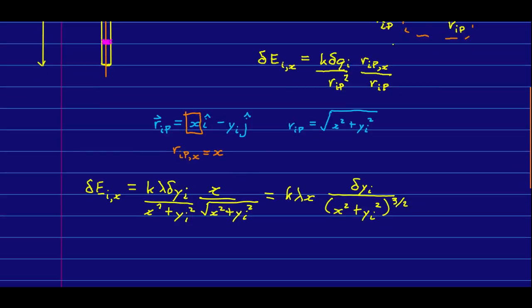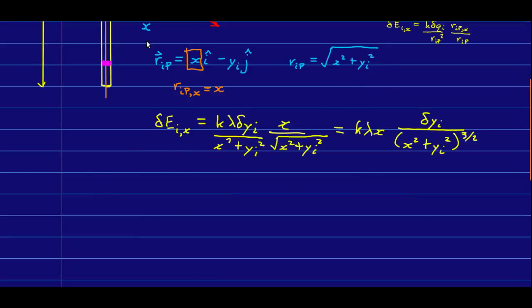We're now ready to set up our integral. Note that the idea here is that the total x component of the E field due to the rod at the point P is approximately the sum over all these bits.